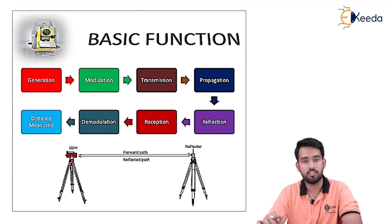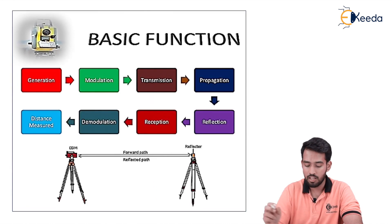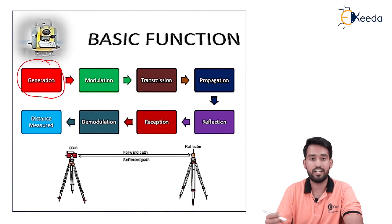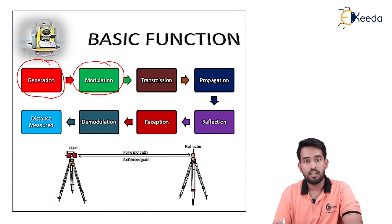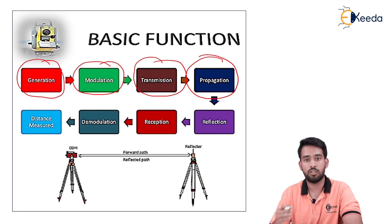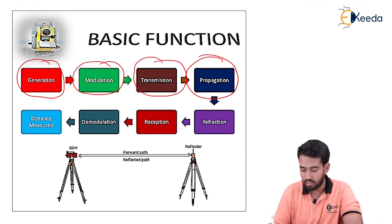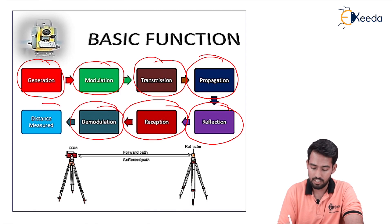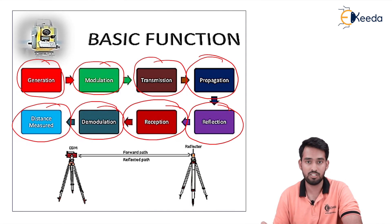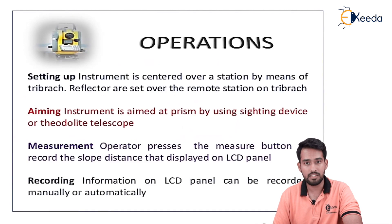Now we'll see the basic working cycle of EDM. First, a signal is generated, then we modulate that data. The waves are then transmitted and propagated to the particular object, where they strike the reflector and reflect back. The reflected waves are received by a receiver, then demodulation is done, and lastly we get the measured distance. This is the functional cycle of EDM. The principle of EDM is basically based upon the light wave theory.